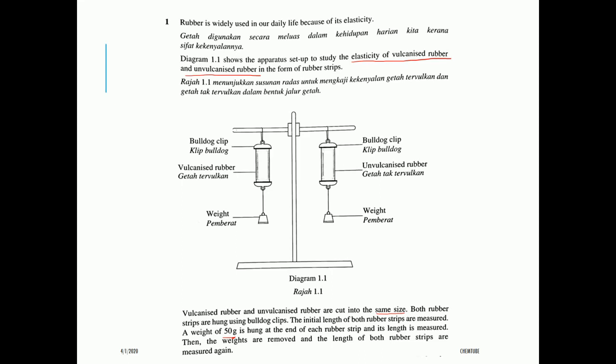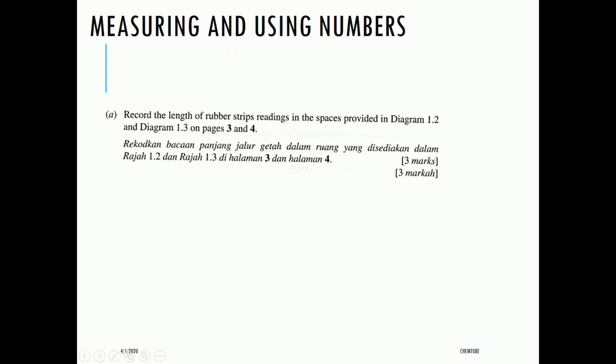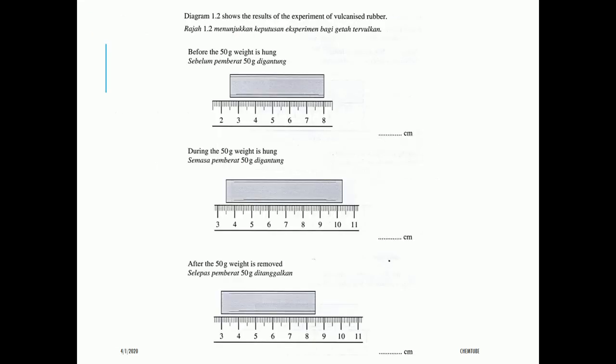A weight of 50 grams is hung at the end of each rubber strip and its length is measured. Then the weights are removed and the length of both rubber strips are measured again. The first scientific skill is measuring using numbers — record the length of the rubber strip readings in the spaces provided in the diagram. For the vulcanized rubber: the initial length is 2.5, so the reading is 8.0, meaning the answer should be 5.5.